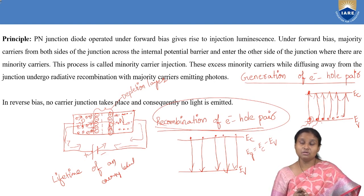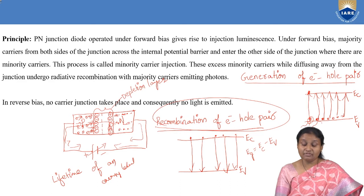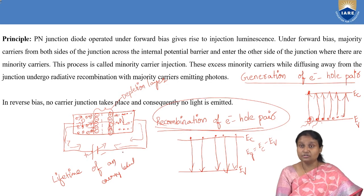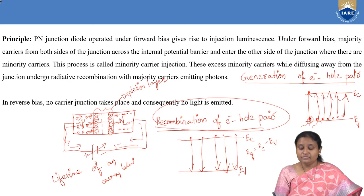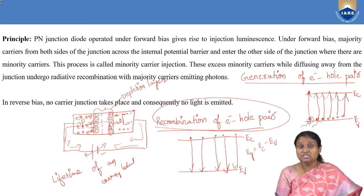Recombination means where electron and hole combine: the mobile electron becomes immobile, loses its energy spontaneously, and comes down from the conduction band to the valence band. During this process energy is released — energy equal to the forbidden energy gap. In generation we supply energy to take electrons to a higher state; in recombination, the electron makes a transition from higher state to lower state and releases energy equal to the forbidden energy gap.